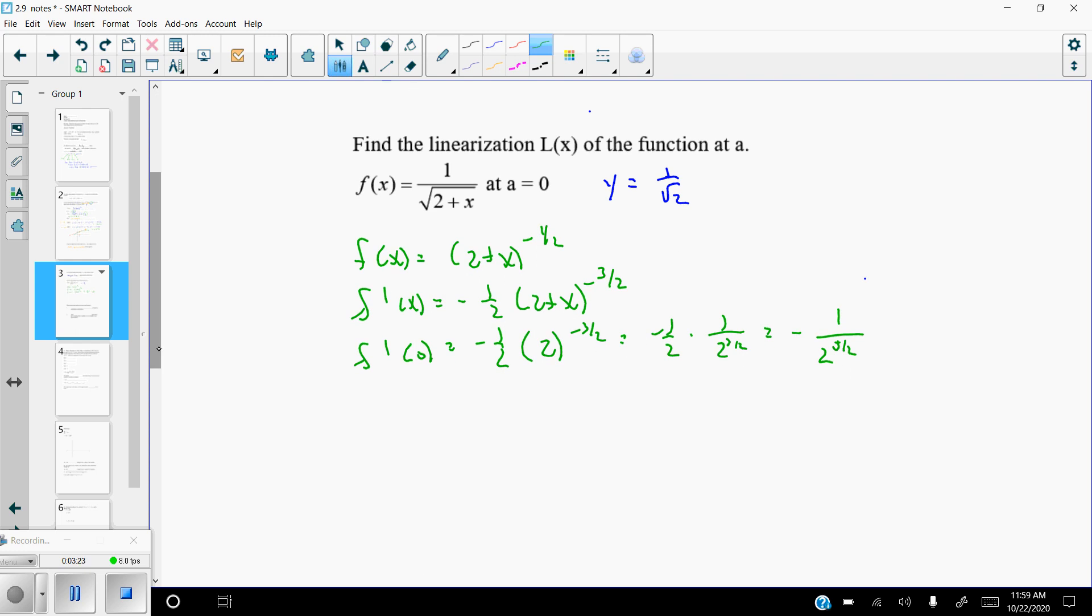So now all we have to do is write the linearization function. So again, I think it's easier just to go ahead and start off in point slope form. So that's what I'm going to do, point slope form. Y minus y1, which is 1 over root 2, and you can rationalize, you don't have to, equals the slope, which is negative 1 over 2 to the 5 halves times x minus x1, which is just x minus 0. So to put this in our linearization form, we just add the y value to the right. So we're going to add 1 over root 2 to the right and change y to L(x). So our linearization is going to be 1 over root 2 minus 1 over 2 to the 5 halves. Technically, I could put x minus 0, but x minus 0 is just x, so it's just x. That is our linearization function.